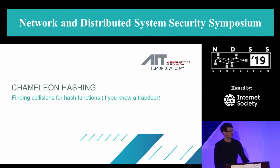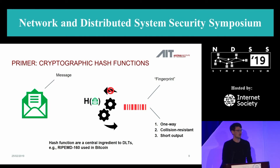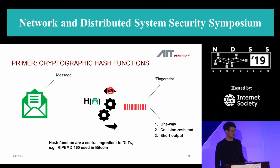So what is chameleon hashing — or, stated differently, finding collisions for a hash function if you know a trapdoor? As a primer: cryptographic hash functions are used extensively as a central ingredient in distributed ledger technology — for example, RIPEMD-160 in Bitcoin. You have a message (depicted here in green), you put it into function H, and you get out a fingerprint. The function has three features: it is one-way (hard to recover the message from the fingerprint), collision-resistant (hard to find two different messages mapping to the same output), and produces a short output (the fingerprint is much shorter than the message).